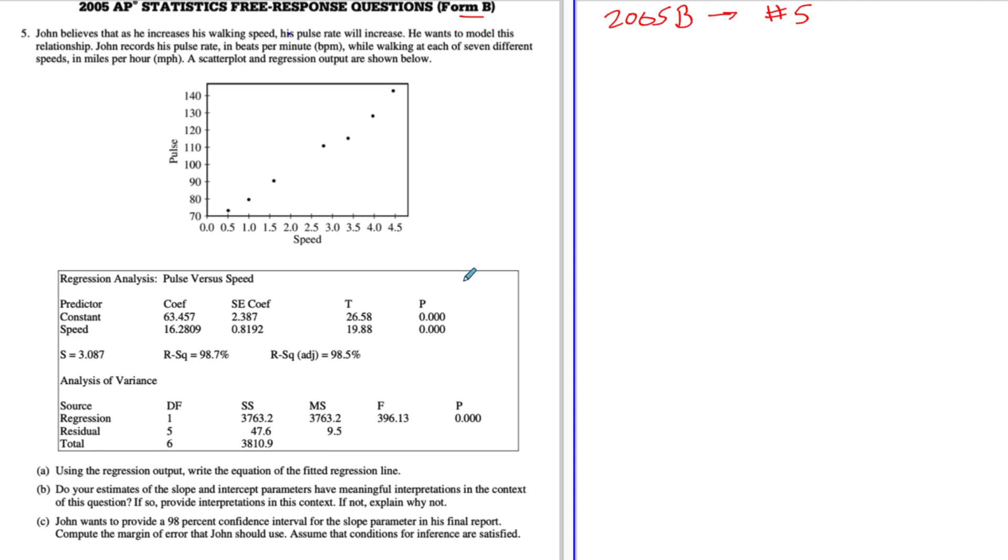So this is a very common regression output in AP stats. And I'm going to train you to go right here where it says coefficients. This is probably the most important part of the output, depending on what they're asking you. But these values right here are the coefficients of the regression equation, the linear equation. So we have a constant and the variable speed. So the coefficient for speed is 16.2 and the constant is 63.457.